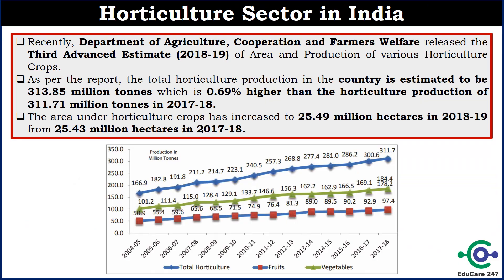Let's understand the Horticulture sector in India. Recently the Department of Agriculture, Cooperation and Farmers Welfare released the third advance estimate of area and production of various horticulture crops. In this report it has been found that in 2018-19 the total horticulture production is 313.85 million tons, which is 0.69% higher than the production from last year. The last year production was 311.71 million tons. The area covered under horticulture crops is 25.49 million hectares, and last year it was 25.43 million hectares.